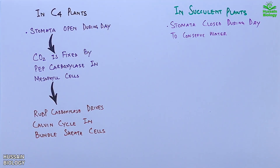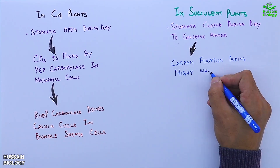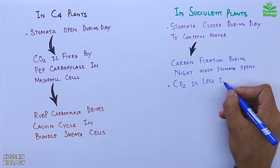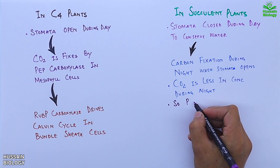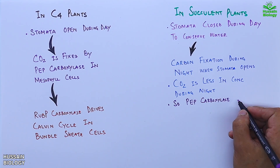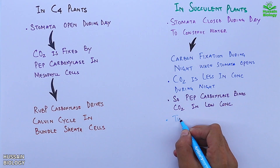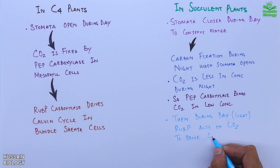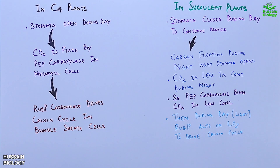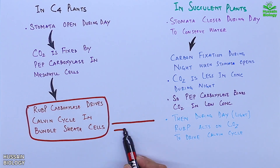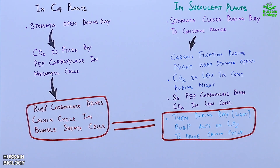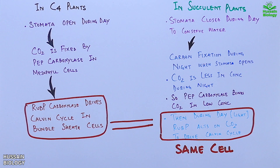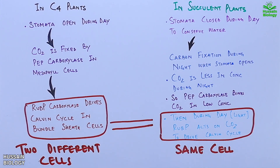On the other hand, in succulent plants the stomata are closed during the daytime to conserve water, so carbon fixation occurs during the night time when stomata open. During the night, CO2 concentration is low, but PEP carboxylase can bind CO2 even at low concentrations. During the daytime, RuBP acts on CO2 to drive the Calvin cycle. The final steps are the same in both pathways, but in succulent plants the whole process occurs in one cell — the mesophyll cell — whereas in C4 plants it occurs across two cell types: mesophyll and bundle sheath cells.